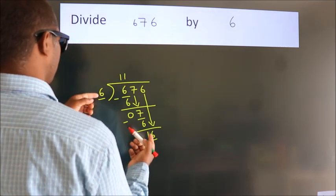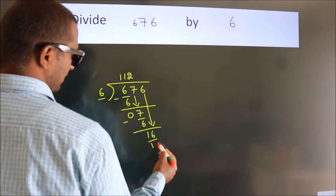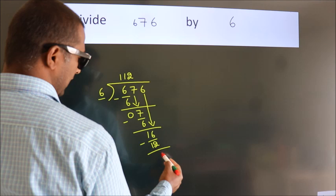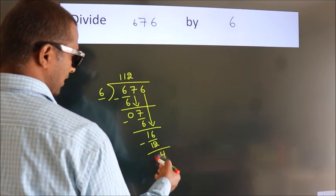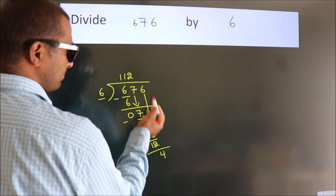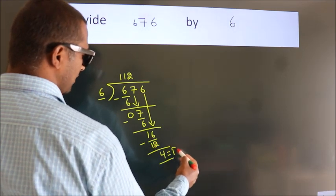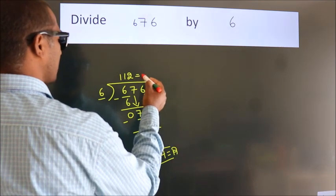Six twos are twelve. Now we subtract and get four. After this, no more numbers to bring down, so we stop here. This is our remainder; this is our quotient.